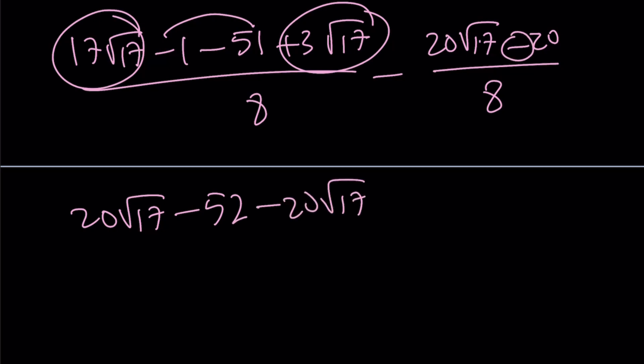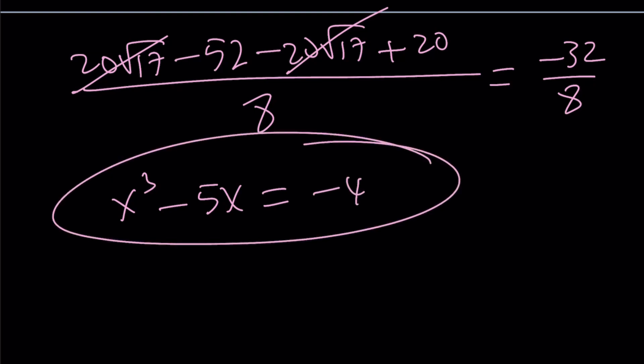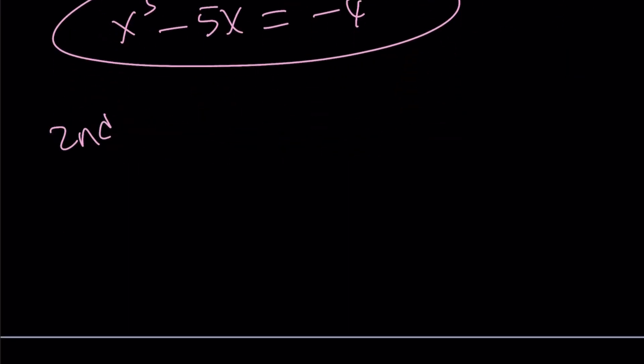And then we're going to add because you have to negate it. Remember, double negative, divide by 8. That should be the answer. 20 root 17 cancels out. Negative 52 plus 20 is equal to negative 32 over 8, and that is equal to negative 4. Great. So that brings us to the end of the first method and the beginning of the second method.